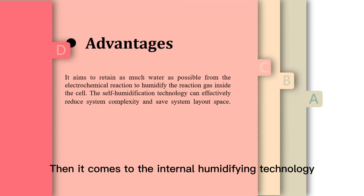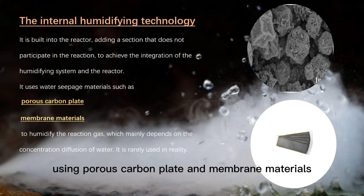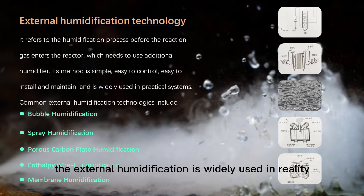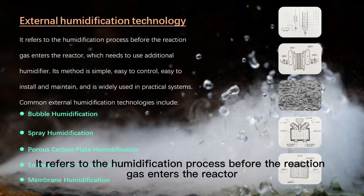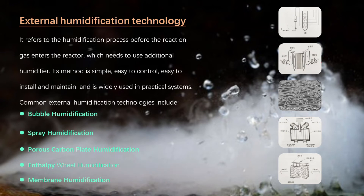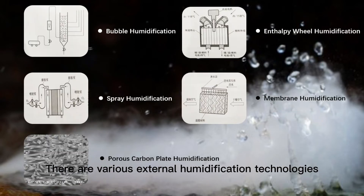Internal humidifying technology is built into the reactor, using porous carbon plates and membrane materials, but it is rarely used in reality. External humidification is widely used in reality. It refers to the humidification process before the reactants enter the reactor. It needs an additional humidifier. Its method is simple, easy to control, install, and maintain.